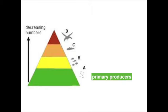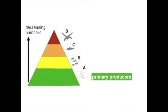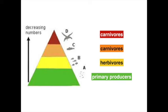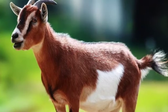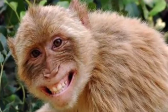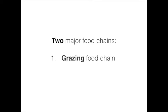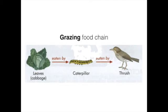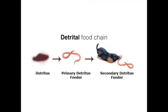The first trophic level belongs to the primary producers, the second level to the herbivores, and higher levels to the consumers. Some consumers occupy a single trophic level, but many others, such as omnivores, occupy more than one. Within any ecosystem, there are two major food chains: the grazing food chain and the detrital food chain. The distinction is the source of energy for first-level consumers. In the grazing food chain, the source is living plant biomass or net production. In the detrital food chain, the source is dead organic matter or detritus.